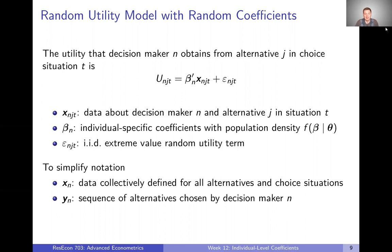If it's easiest to think about T being time, that's totally fine. But other than adding the T index, this is exactly the same random utility model that we saw with the mixed logit model. We're going to assume that each individual has their own coefficients, beta sub N, and that that's consistent over all of the different choice situations that we see.